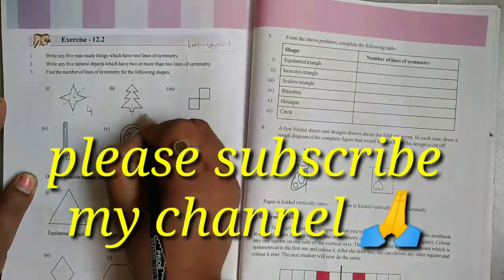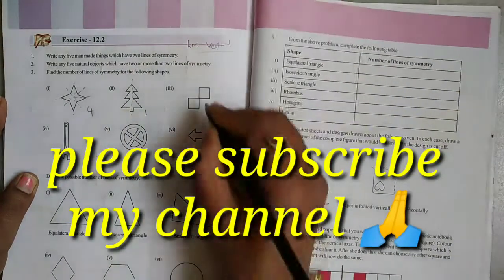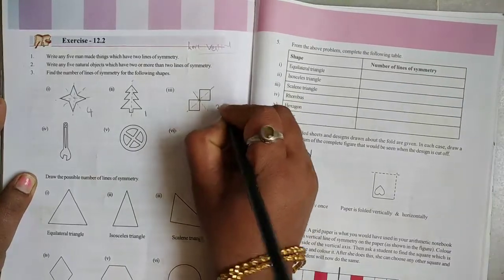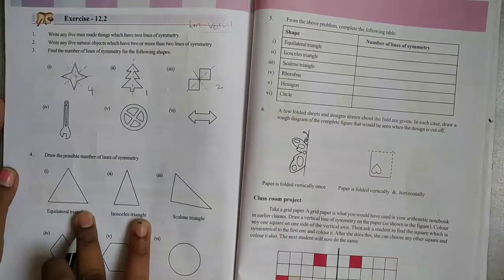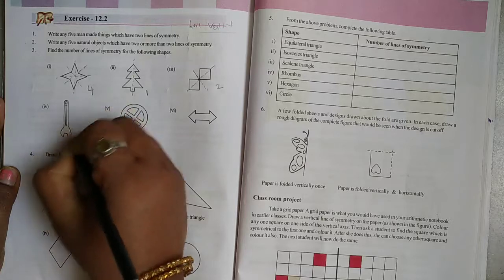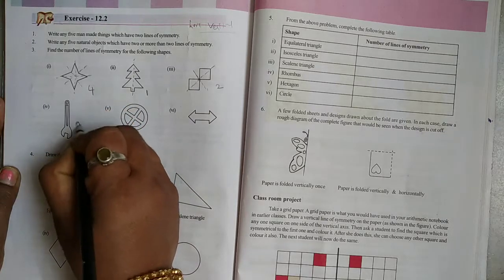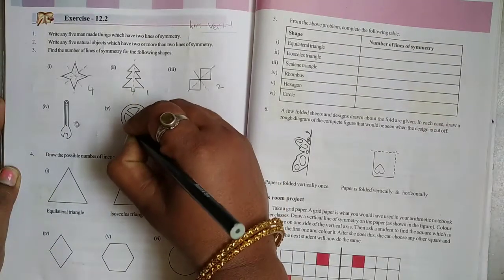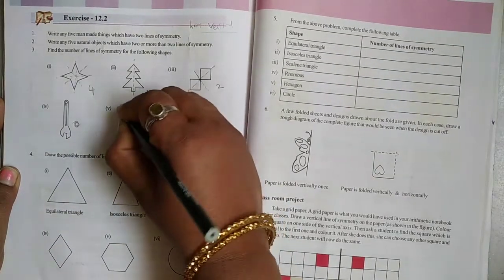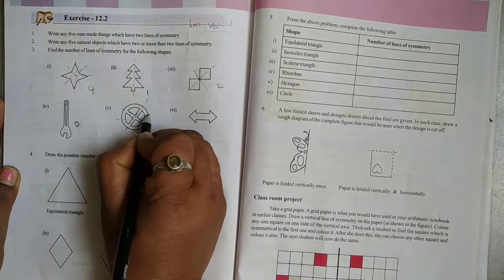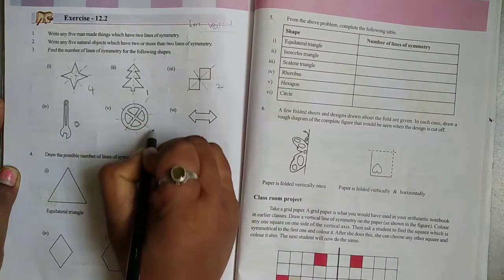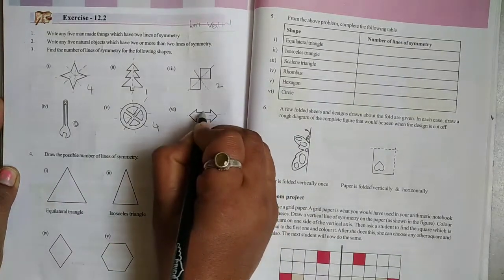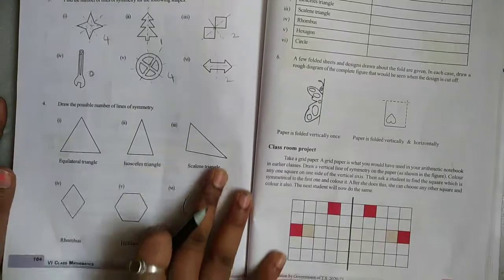Here, only 1 line symmetry. Here, 2 lines symmetry. Here, it's zero symmetry. No, it has no symmetry. Here, 1, 2, 3, 4. Four line symmetry. Here, 1, 2. Two line symmetry.